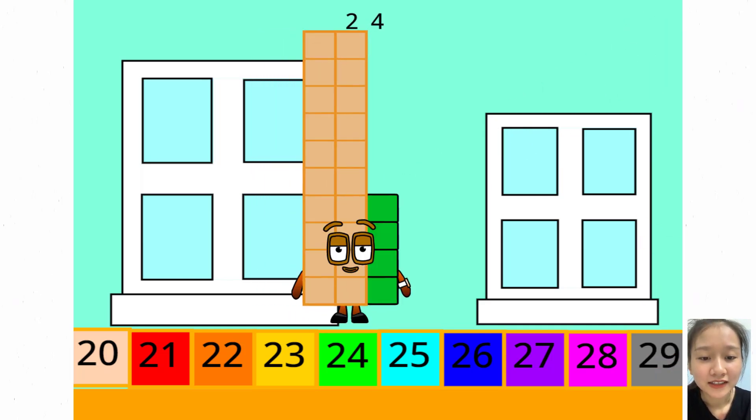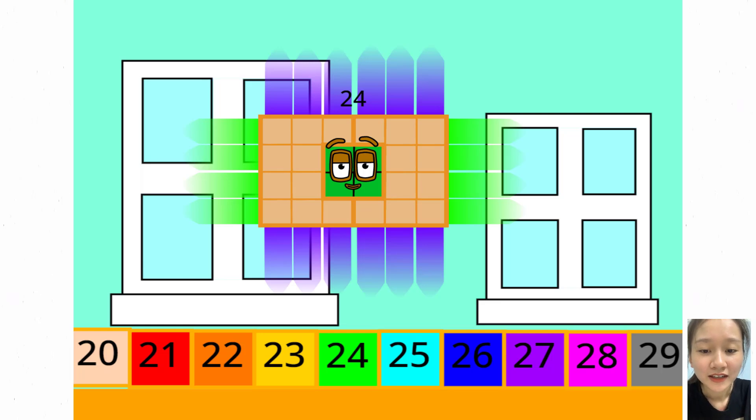If you chose me, you are correct. Hello. I am 24. I may not look like much, but guess what? 6 by 4. Hi everybody. I am a super rectangle. A more powerful rectangle. If you ask me, look at all the arrays I can do.